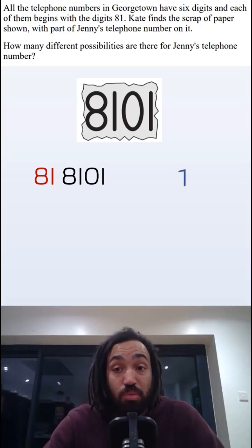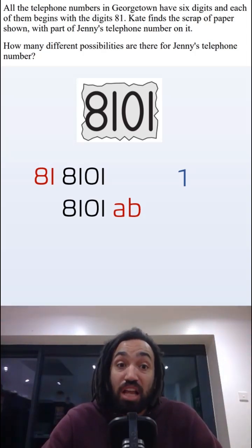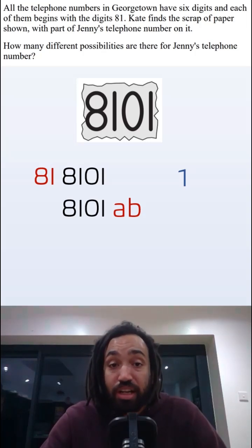As the number already starts with 81, we can add two digits to the end. Let's call these digits AB and they could be anything from 00 up to 99. So this gives us 100 more solutions.